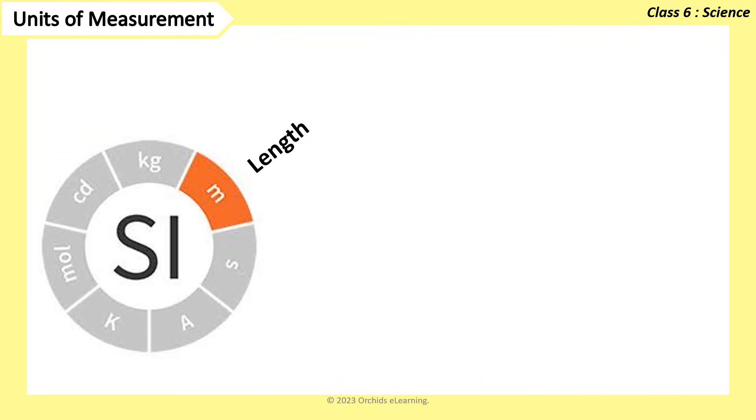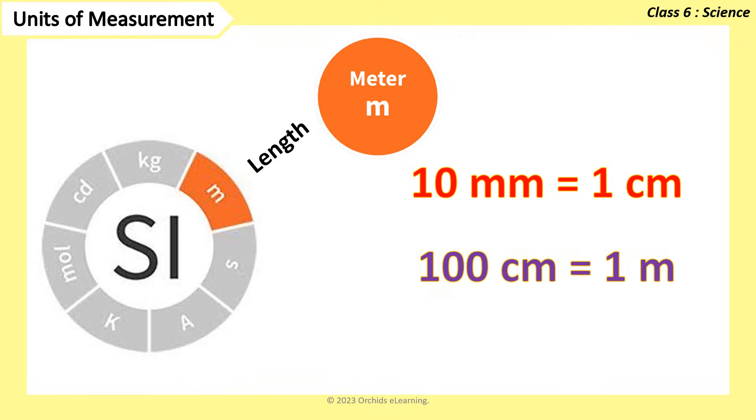SI Units of length is meter. 10 millimeters is equal to 1 centimeter. 100 centimeters is equal to 1 meter. And 1000 meters is equal to 1 kilometer.